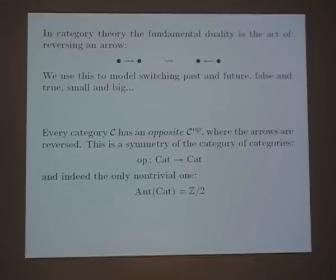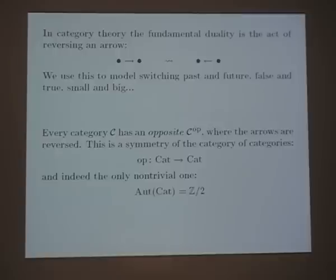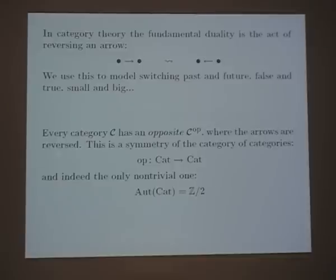Every category has an opposite category where the arrows have been reversed, and this gives us a symmetry of the whole theory of categories. You can say there's a category of all categories, and there's a functor called 'taking the opposite,' which is a symmetry. In fact, that's the only symmetry of the theory of categories — the automorphisms of the category of categories is Z mod 2, with the non-trivial element being 'opposite.' So duality is built into category theory.